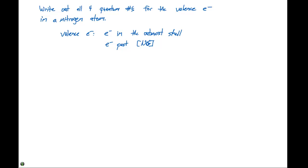If we look at the electron configuration of nitrogen, it's going to be helium, 2s², 2p³. So this atom is going to have five valence electrons, and we need to write out the quantum numbers for all five of these valence electrons.